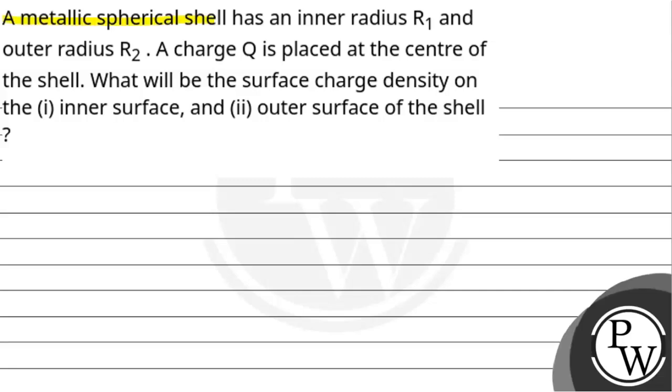The question is: a metallic spherical shell has an inner radius R1 and outer radius R2. A charge Q is placed at the centre of the shell. What will be the surface charge density on the first inner surface and the second outer surface of the shell?